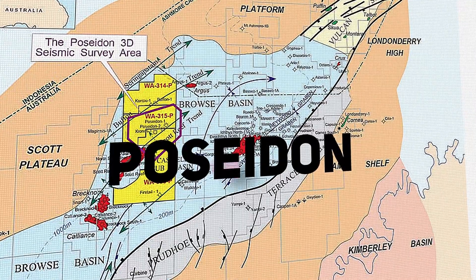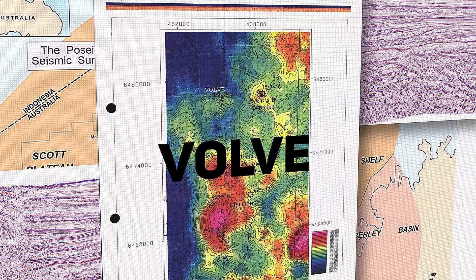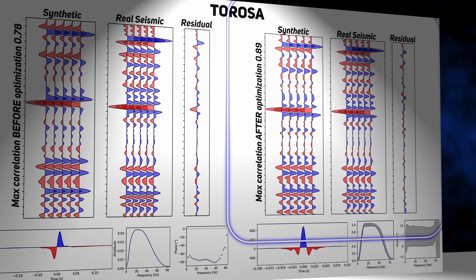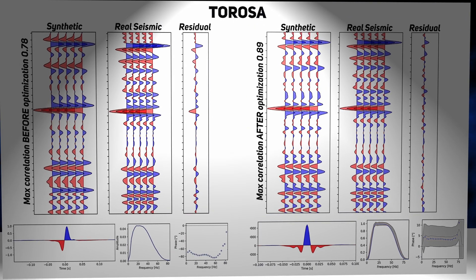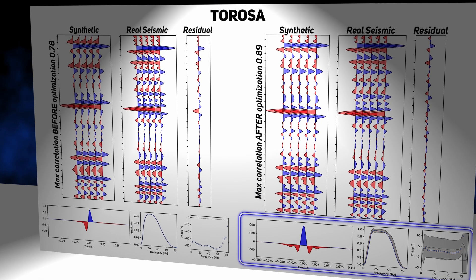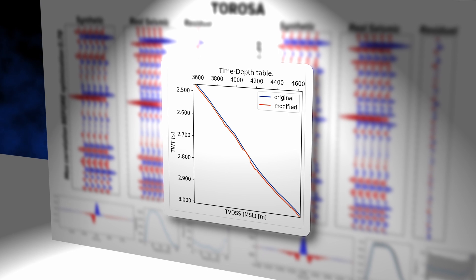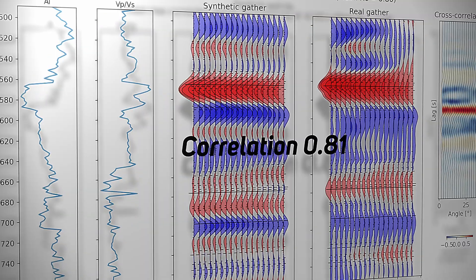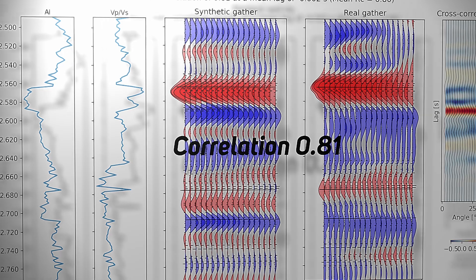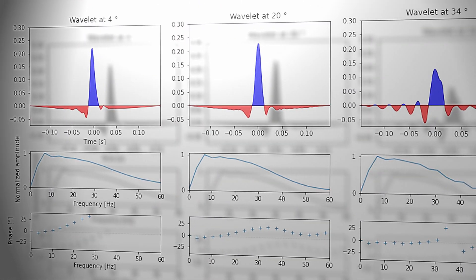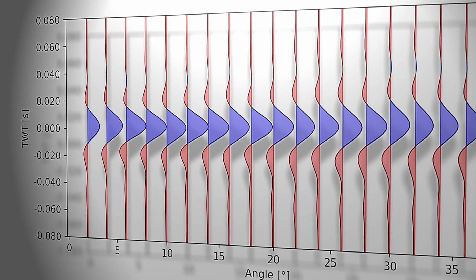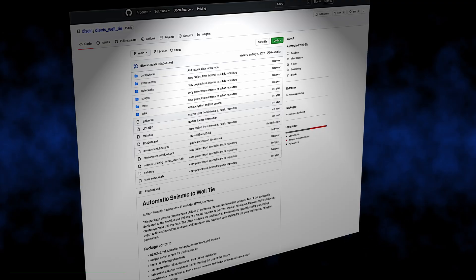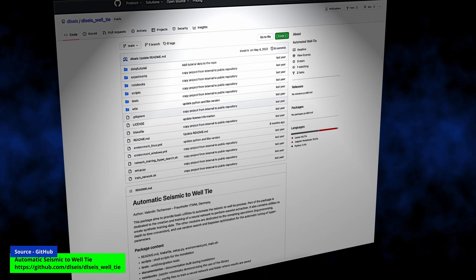They demonstrate the method on two challenging real data applications: a Poseidon field well tie and a pre-stack well tie on the WOLF dataset. For the Toros well, the optimized fit matches the predicted synthetic seismic and real trace better, and the wavelet has a more realistic phase. The overall compute time is about three minutes on a modern computer. They also showed encouraging results on the pre-stack well tie on the WOLF dataset. The source code for this work was also provided by the authors, giving you tools to create a synthetic dataset and train the wavelet extraction algorithm.